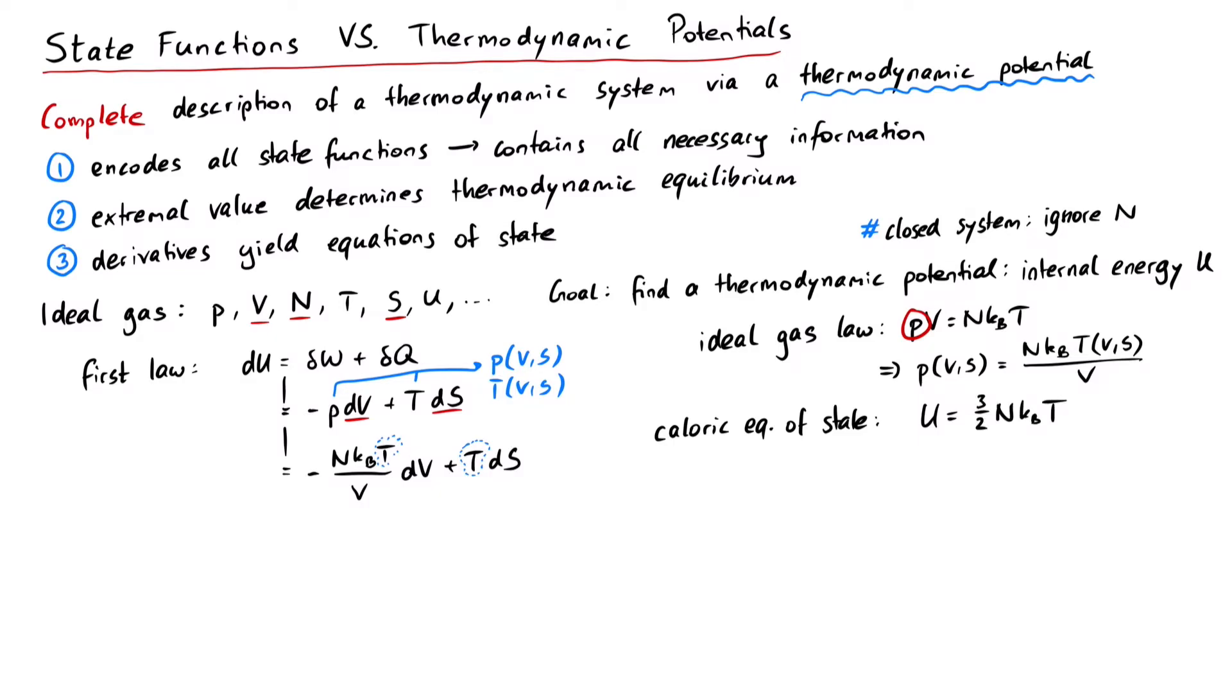Here we can see an extremely important difference. We are looking for the thermodynamic potential U, which is a function of S and V, contains all necessary information of the system and yields equations of state after we differentiate. Please do not confuse this with the state function u here, which is a function of temperature, does not contain all information about the system, and will not give us equations of state after differentiation.